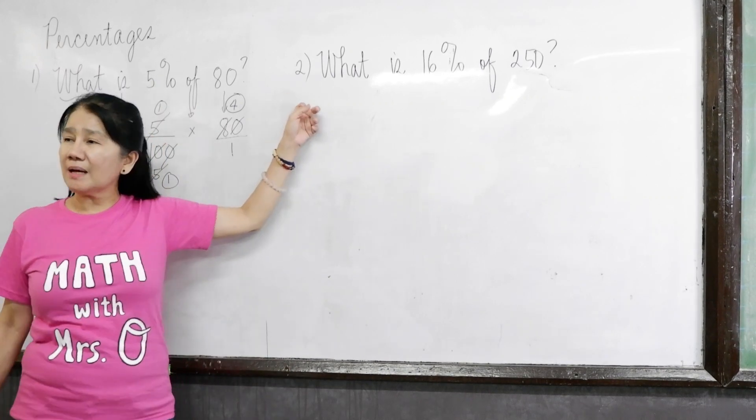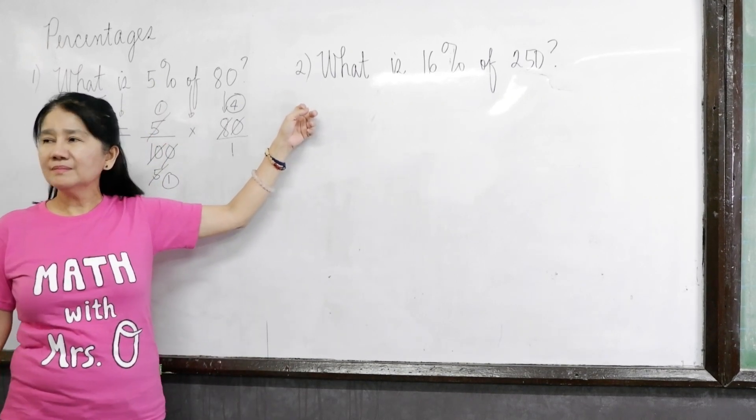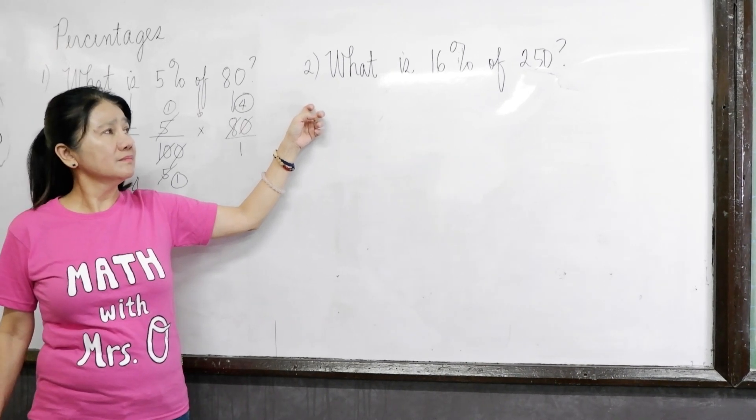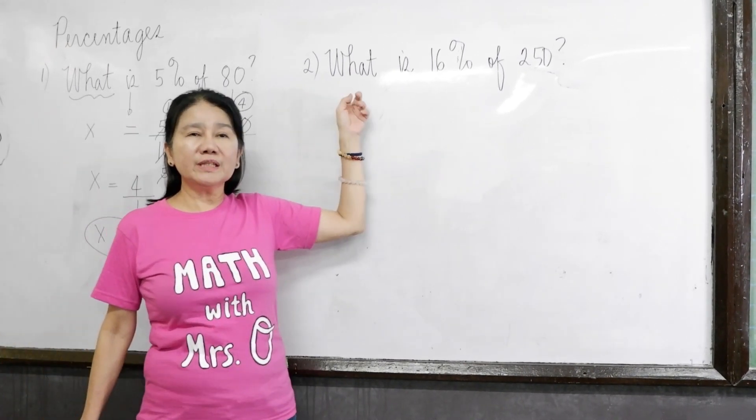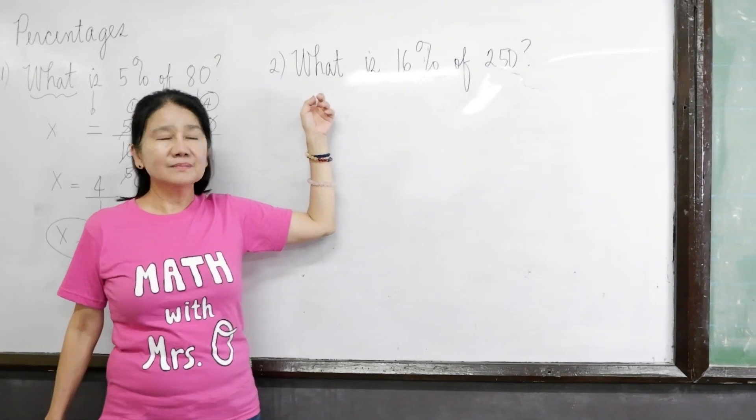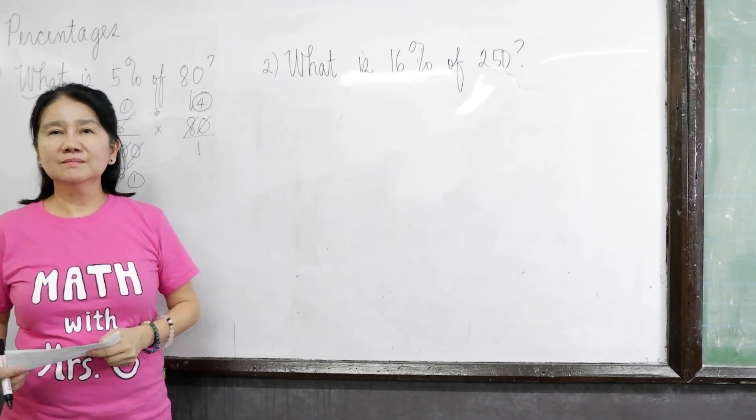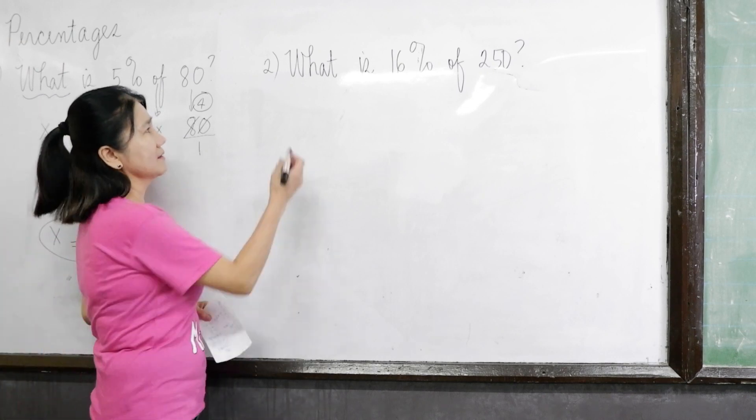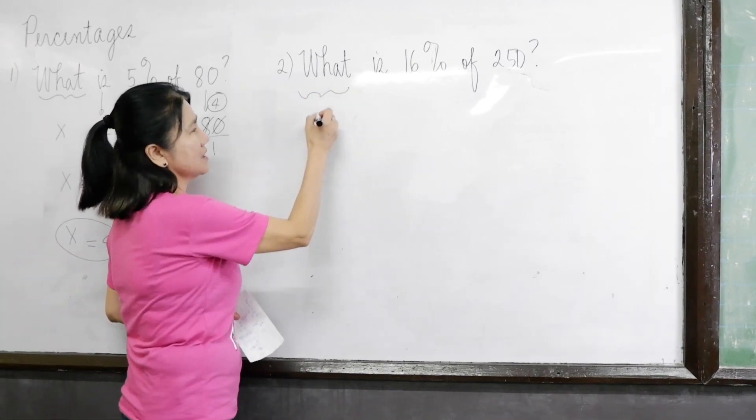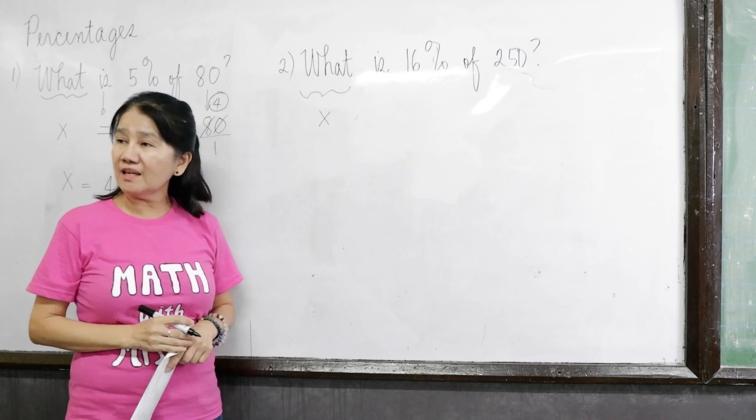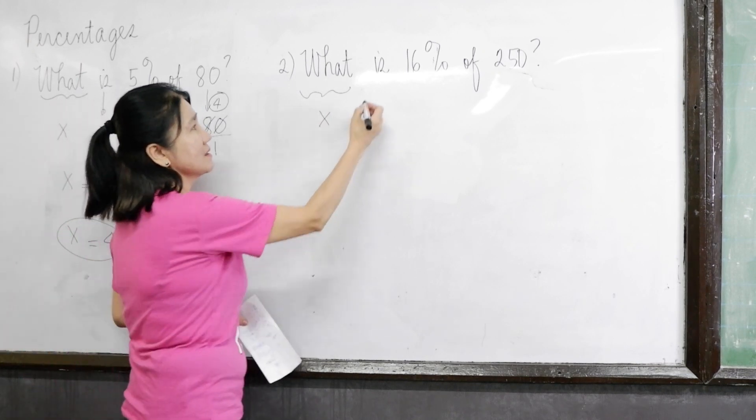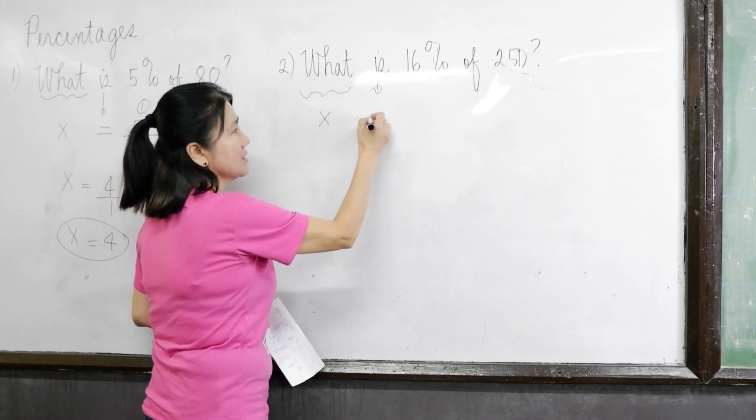Okay. Read our second example. What is 16% of 250? Yes. Everybody read it. What is 16% of 250? Okay. When we say what, this is the unknown, so you write X again. Is? Is? Means equal.